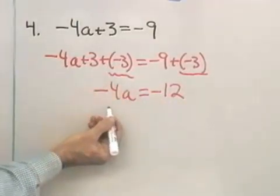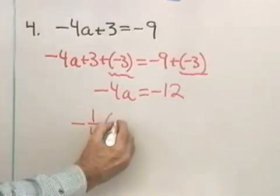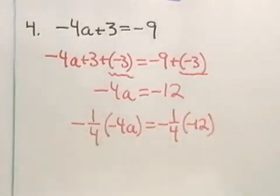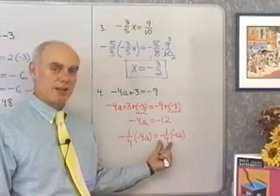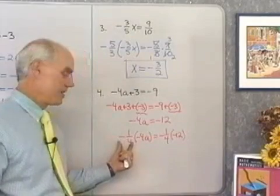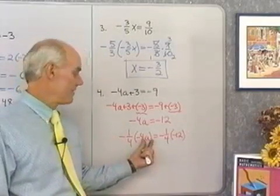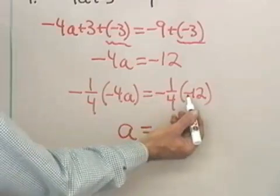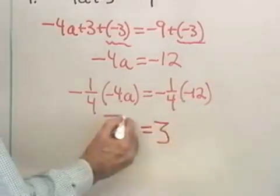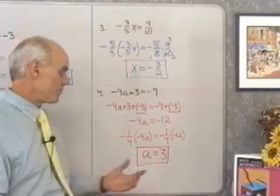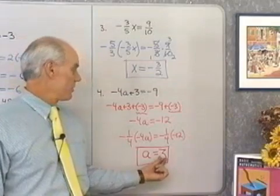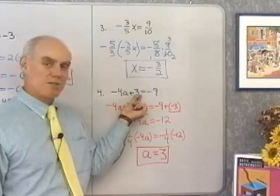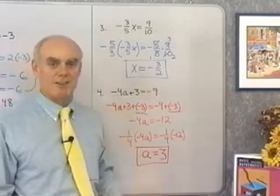Next, I'm going to multiply both sides by the reciprocal of negative 4, so negative 1/4 times negative 4a equals negative 1/4 times negative 12. Whatever I multiply the left side by, I multiply the right side by the exact same thing. Negative 1/4 times negative 4 is 1 times a, which is a. A negative times a negative is positive, and 1/4 of 12 is 3, so a equals 3. Checking: negative 4 times 3 is negative 12, plus positive 3 is negative 9 — negative 9 equals negative 9. That is the solution.